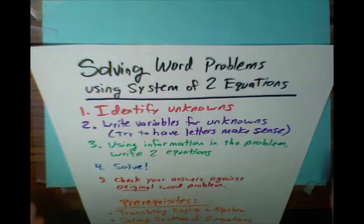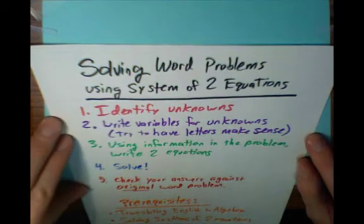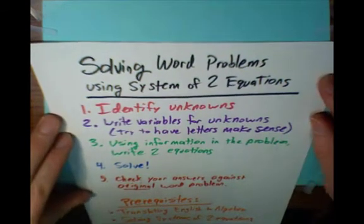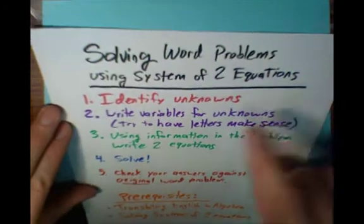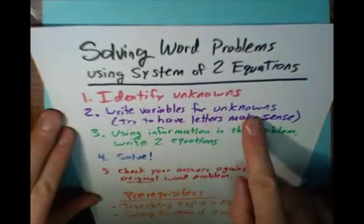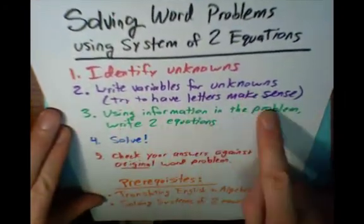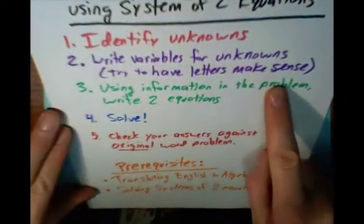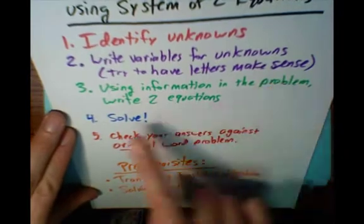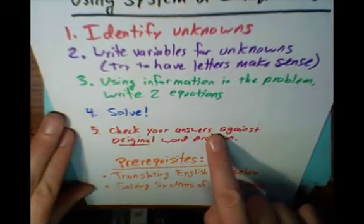We'll do a second example in this video. Just to recap, to solve word problems with a system of equations, we first identify the unknowns, writing variables for them. Then we write two equations using the information. We solve it, and we check our answer.